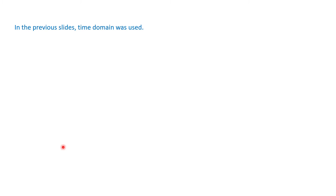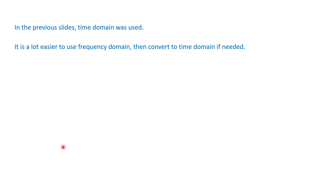In the previous slides we were dealing with the time domain because we were taking derivatives of current with respect to time. It is much easier to use the frequency domain when dealing with inductances. Electrical engineers generally prefer not to deal with integration and derivatives. Fortunately, there is something called phasors, which allows us to avoid derivatives. You can do the calculations in the frequency domain, then convert back to the time domain if needed.